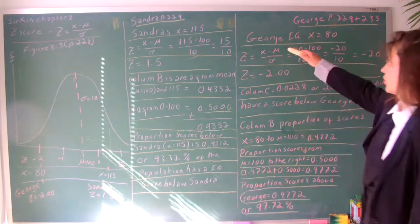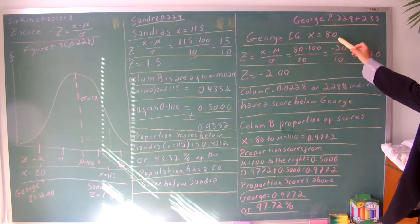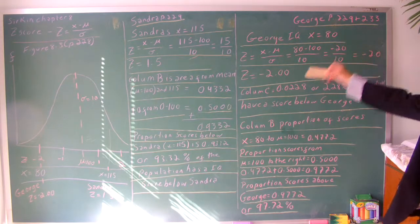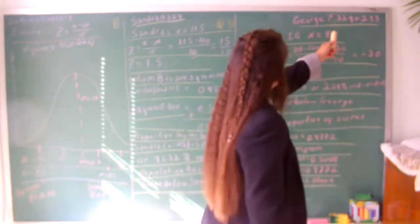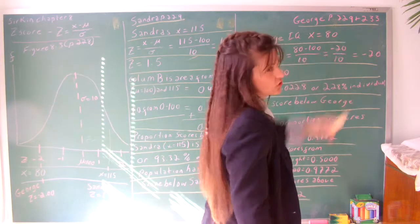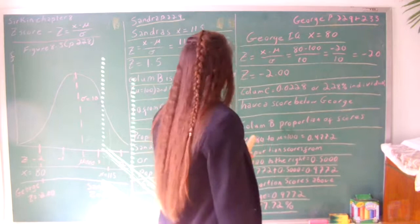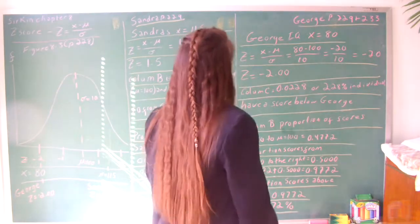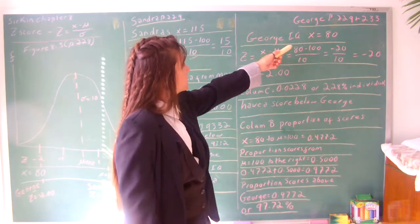Now let's look at George. George has an IQ of x equals 80. We're going to plug his in. His scores from page 229 continue on page 233 because you have those little shaded tables with the columns that tell you what the proportion for the z-score is. Let's look at George's IQ score, x equals 80.